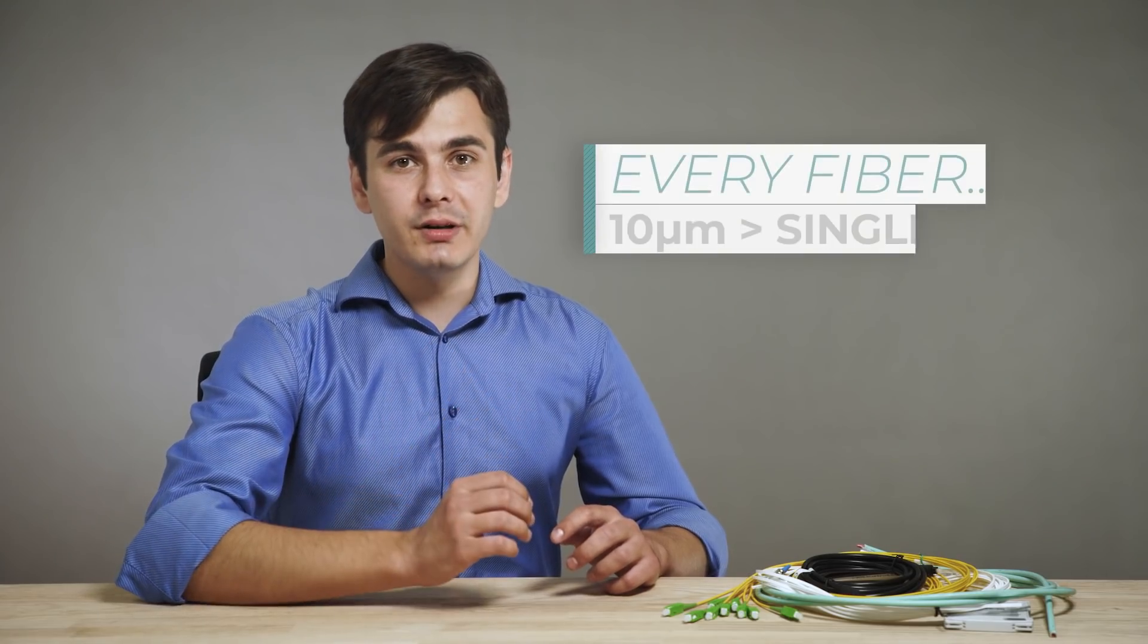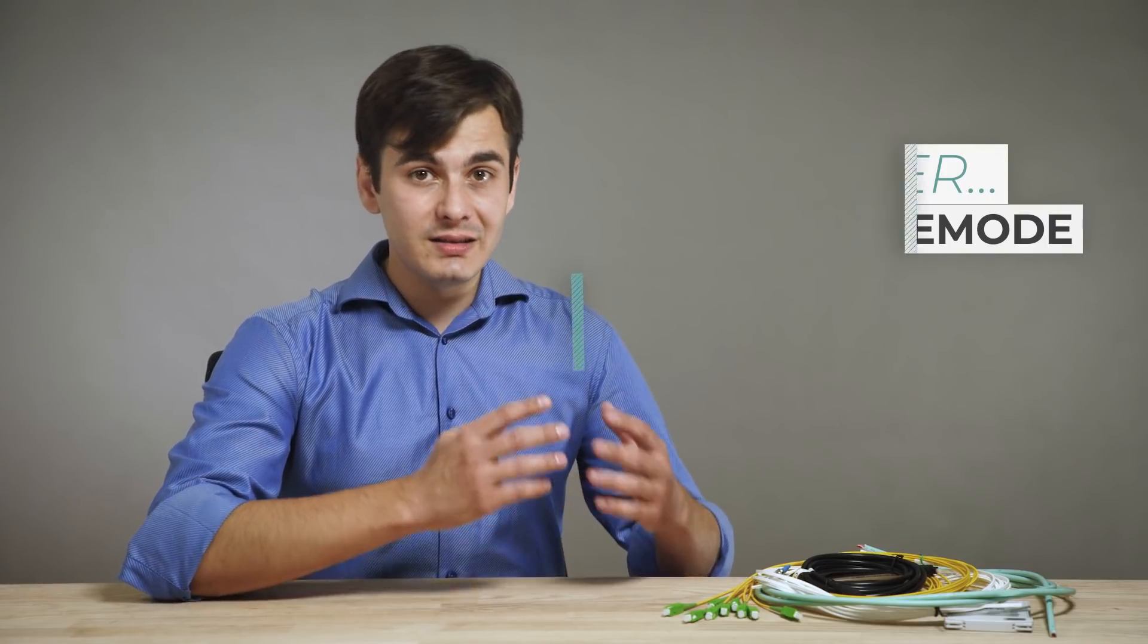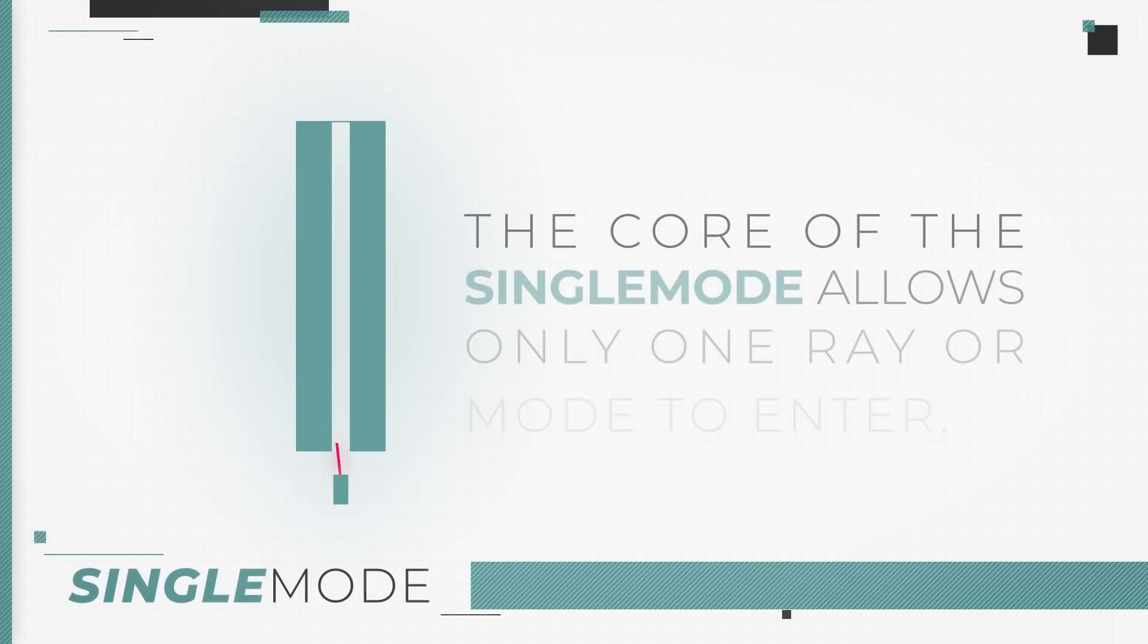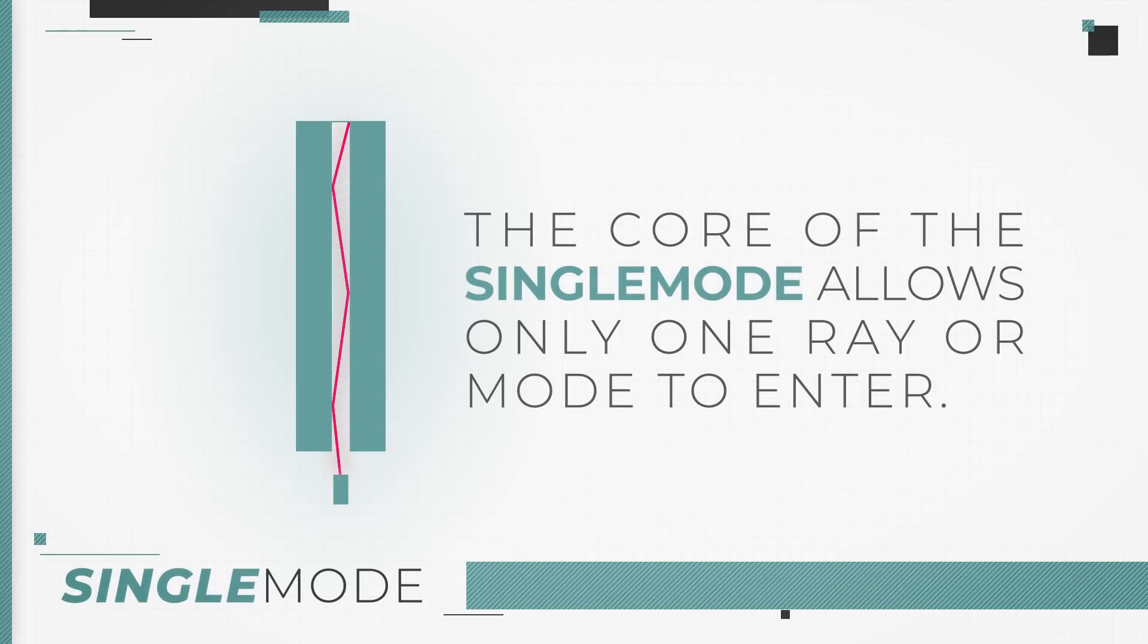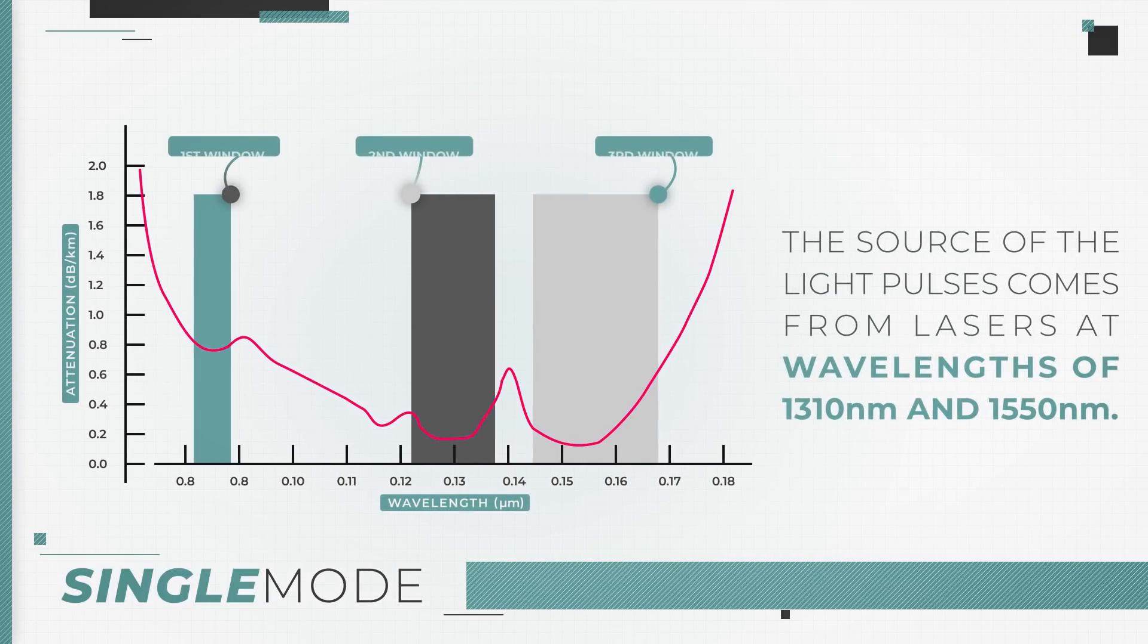By the way, every fiber with a core that is less than 10 microns is considered to be a single-mode. The core of the single-mode is so small that it allows only one ray or mode to enter. The source of the light pulses comes from lasers at wavelengths of 1310 and 1550 nanometers, which have very low losses and, if we can say, infinite bandwidth.